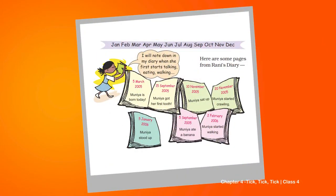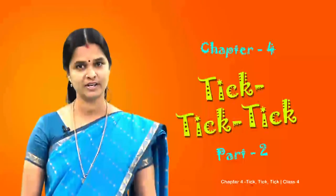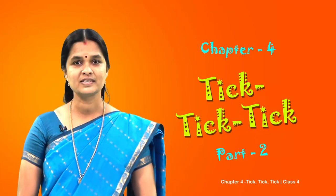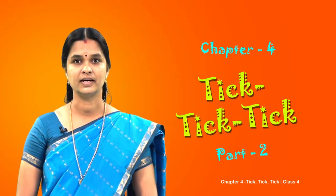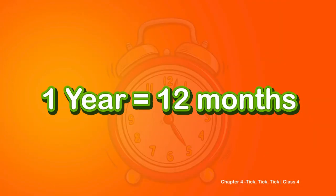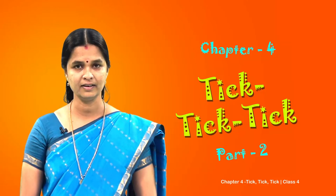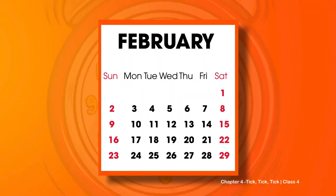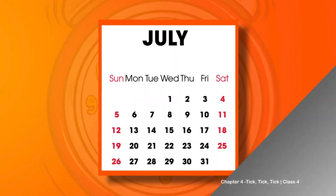Here are the pages from Rani's diary. She has marked what Muniya did in a particular month. Before going into the details of Rani's diary, let us quickly recall what we have studied in our previous classes. How many months are there in a year? Yes, there are twelve months in a year - one year is equal to twelve months.